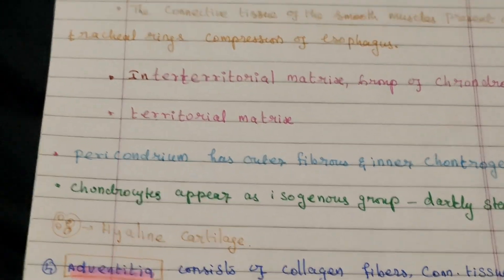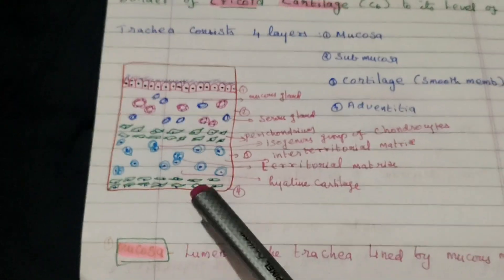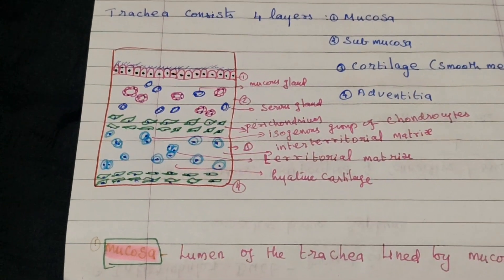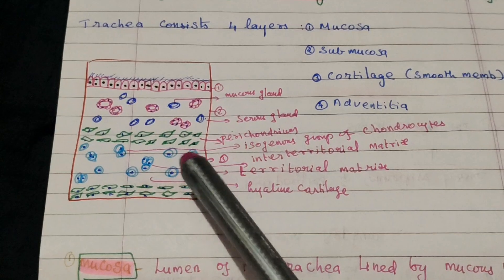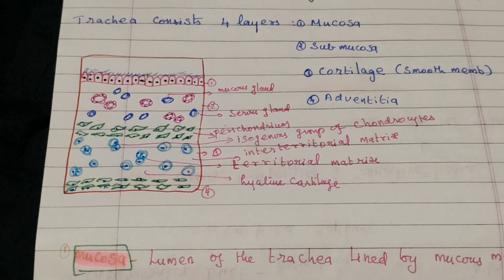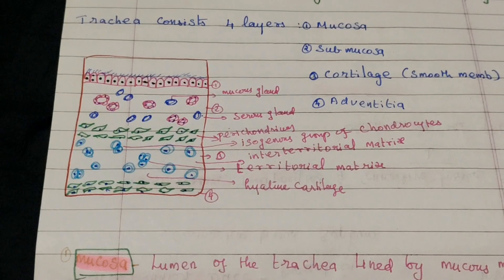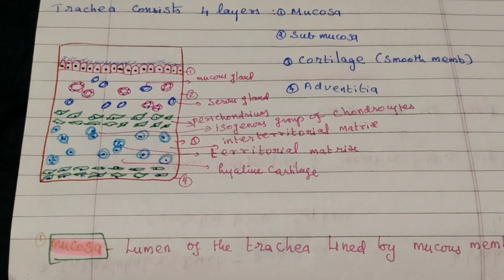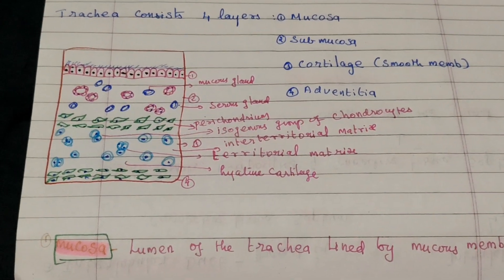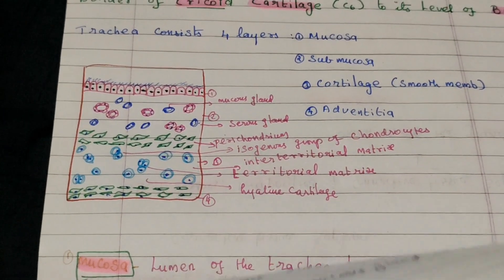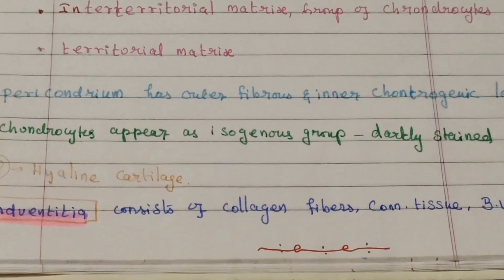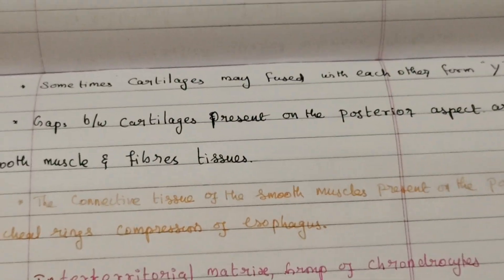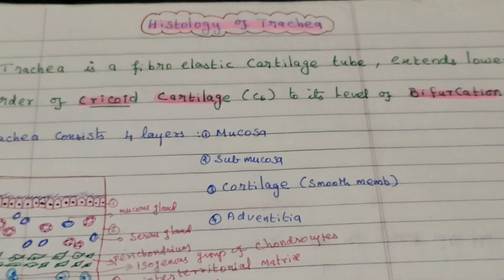The hyaline cartilage contains chondrocytes surrounded by darkly stained territorial matrix. The fourth and final layer is the adventitia, which consists of collagen, fibrous connective tissue, blood vessels, and nerves.